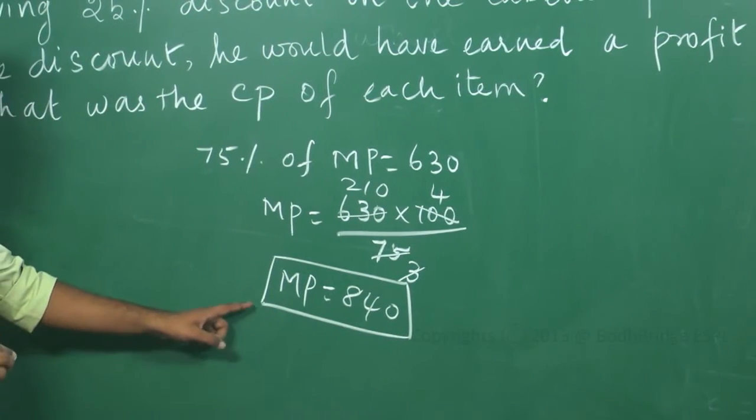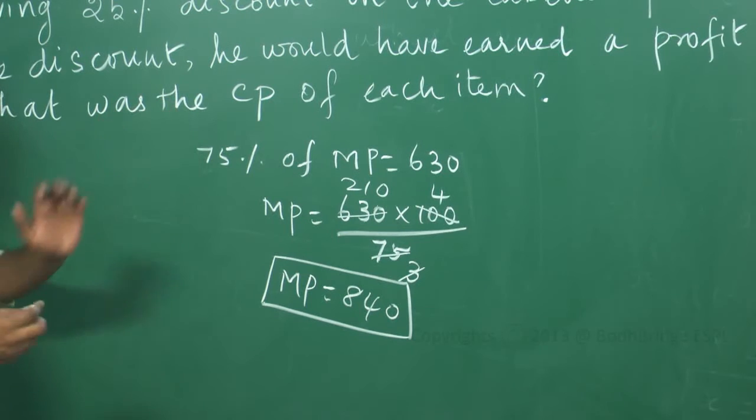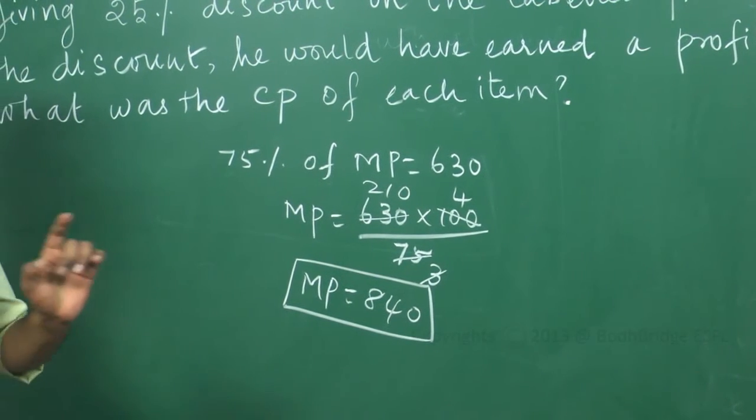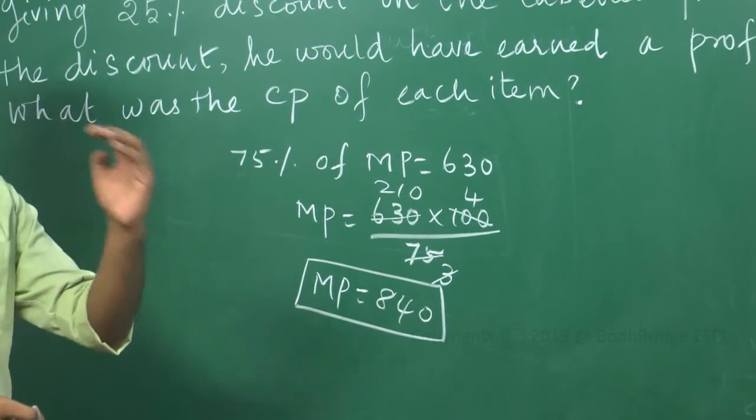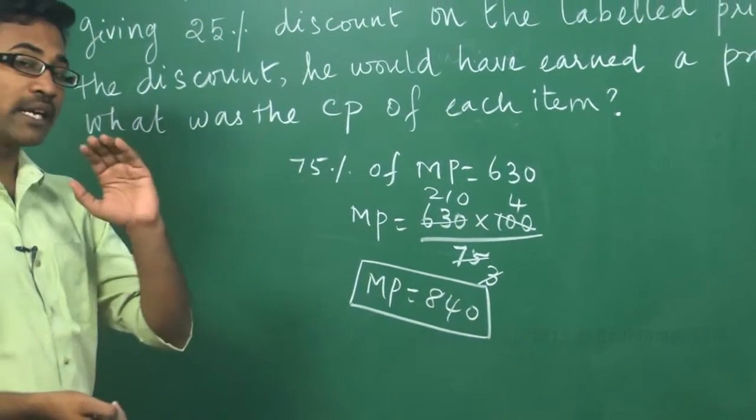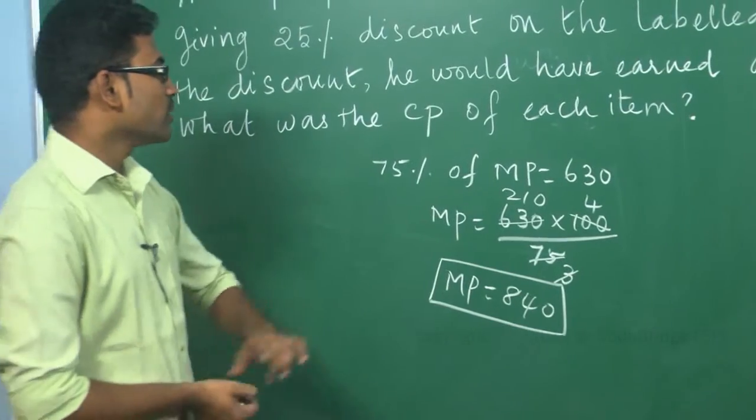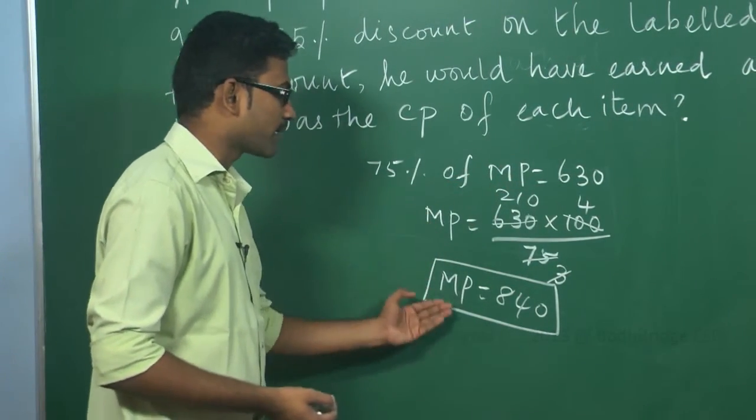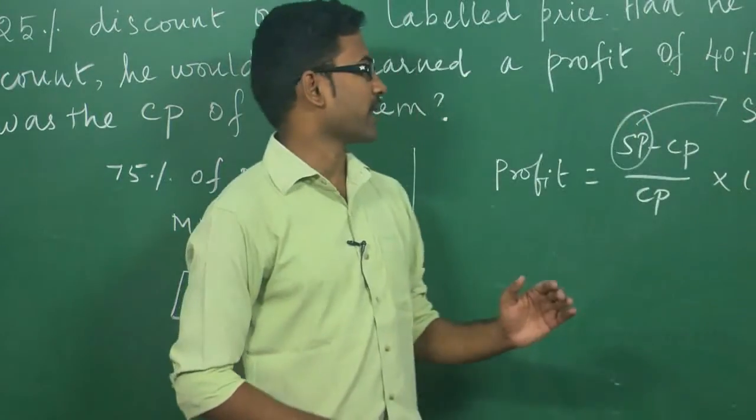Now I got the market price. Because they had given like certain items sold at Rs 630 after a discount of 25%. That means from market price, I am getting only 75%. So if 75% of the market price is 630, what is the market price? We found out. Next, I need to find the cost price.